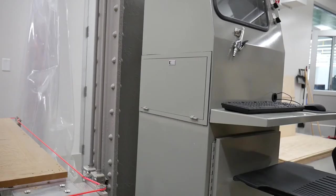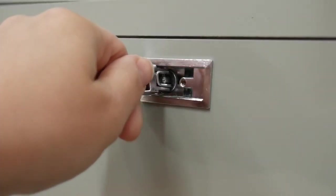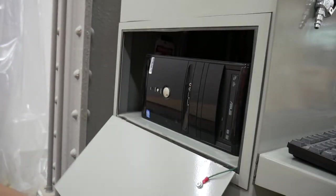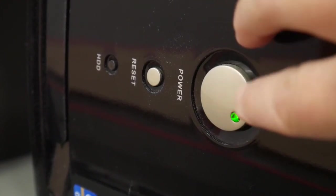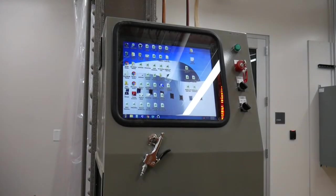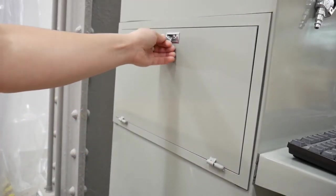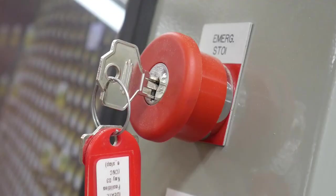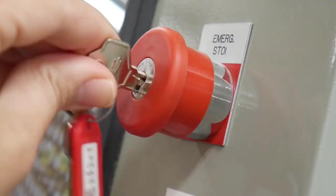Open the side panel on the monitor console and turn the computer on. Close the side panel to prevent dust in the computer. Turn the key to release the emergency stop.